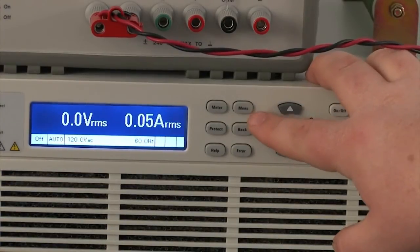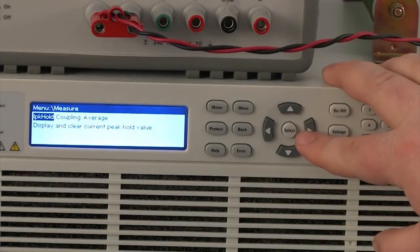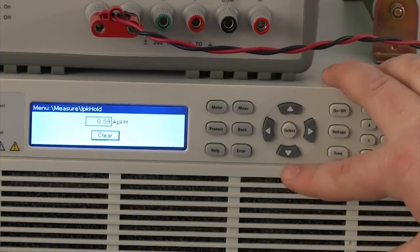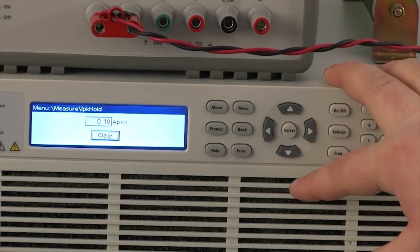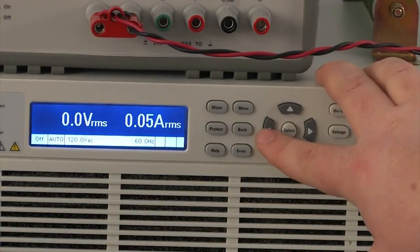So the first thing I'm going to do is I'm going to go to the measure menu and I'm going to go to this IP cold setting or choice and I'm going to clear it just to make sure that anything that was in there previously is cleared out. Back to the meter again.